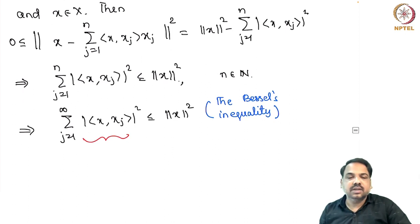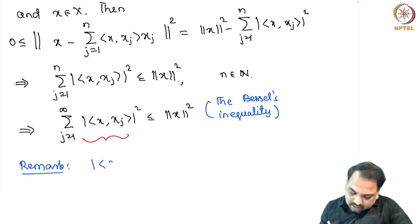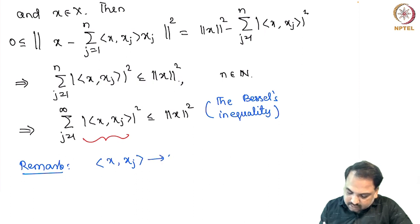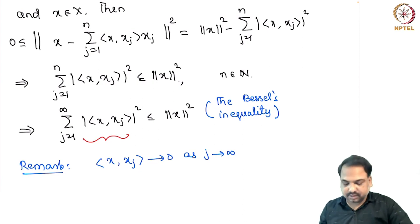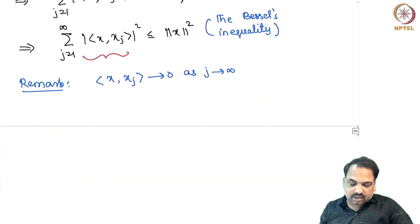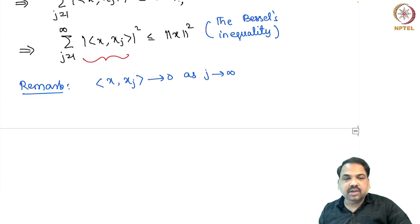That means the series on the left-hand side is convergent. From this we can also immediately conclude that the inner product ⟨x, xj⟩ converges to 0 as j → ∞.